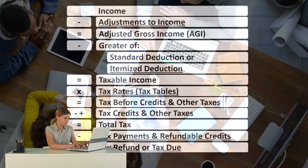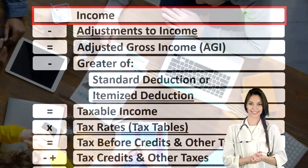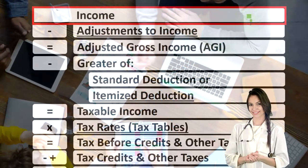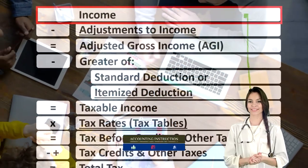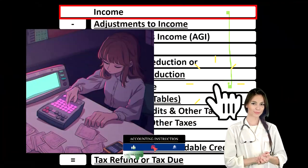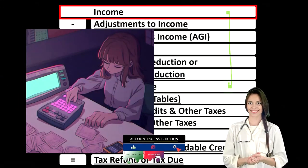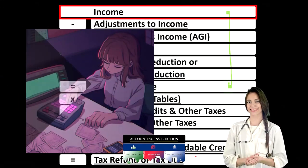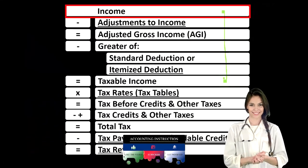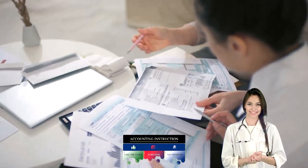Looking at the income tax formula, we're focused on line one — that being income. Remember, the first half of the income tax formula is in essence an income statement. However, it's just an outline, just the scaffolding, with many other schedules and forms flowing into these line items.